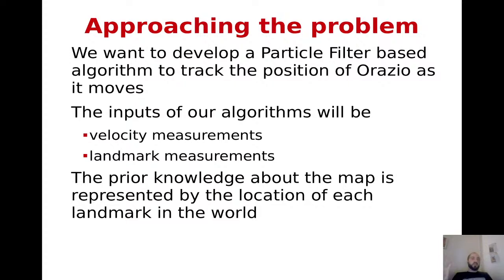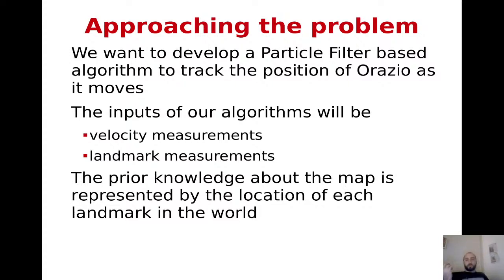The first difference is how the distribution over the state — our belief — is represented. In this case we have a particle distribution, which we can imagine as a set of points where each point carries a certain probability mass represented by weights.